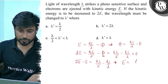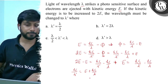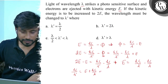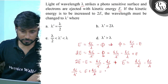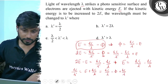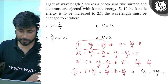So this gives us e equals hc by lambda minus hc by lambda dash. We rearrange to get hc by lambda dash equals e plus hc by lambda. Now substituting e equals hc by lambda minus φ, this becomes hc by lambda dash equals 2hc by lambda minus φ.